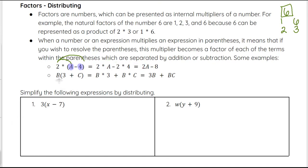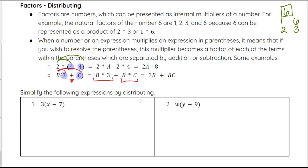Additionally, we have b times (3 plus c). In the parentheses, 3 and c are your terms because they are separated by addition. So we multiply b by each term: b times 3 and b times c. b times 3 — we typically write the number before the variable, so that's 3b. b times c is written as bc. So 3b plus bc is our simplified version.